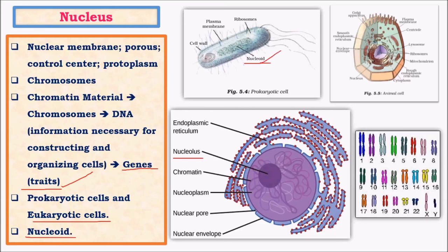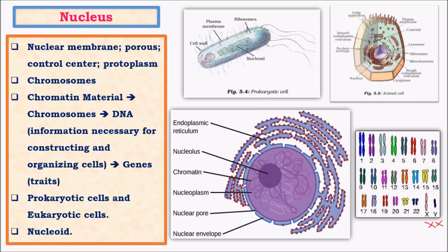To recap: nucleoid is the nucleus without a proper membrane. Coming to chromosomes — human cells have 23 pairs of chromosomes, of which 22 pairs are called autosomes, which are common for both males and females. The 23rd pair has 2 chromosomes called sex chromosomes, which are important in determining the sex of a person. If the chromosomes are X and Y, the sex will be male; if they are X and X, it will be female. One of these chromosomes comes from the father and the other from the mother.